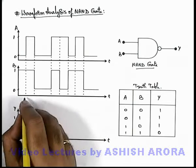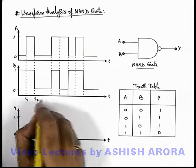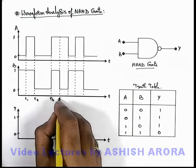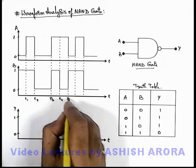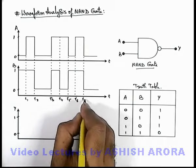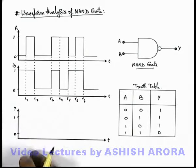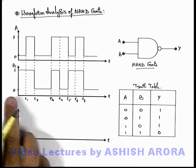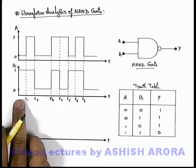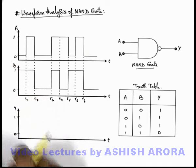Here these are the instants t1, t2, t3, t4, t5, t6, and t7. Corresponding to the duration between each two instants, we will draw the output waveform.